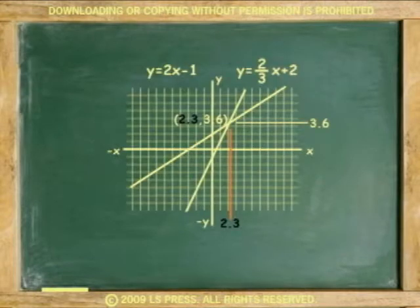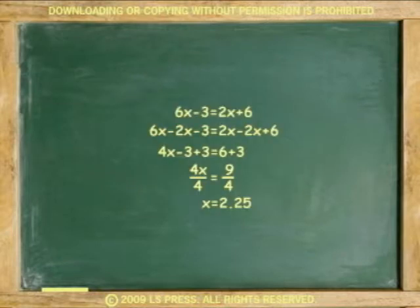The graphical solution in section 5.1 estimated x at 2.3, but x equals 2.25. This is accurate and exact.